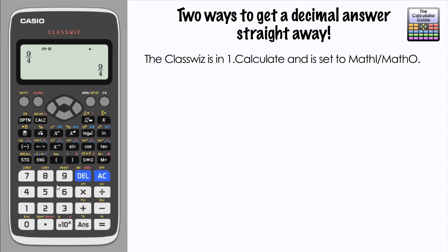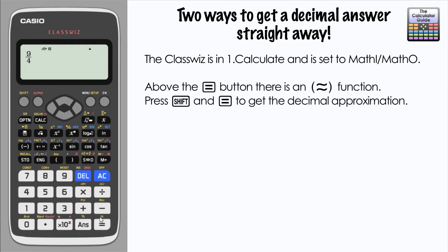I'm going to show you two ways that you can get the decimal answer straight away. The first: if you notice above the equals there is an approximately-equal-to sign, so at the point where you're wanting to execute your answer, if you press Shift beforehand — Shift and then Equals — this will give you the decimal result straight away. In this case, 2.25.